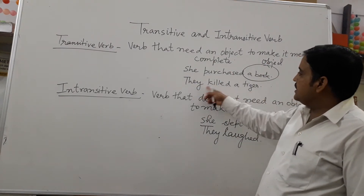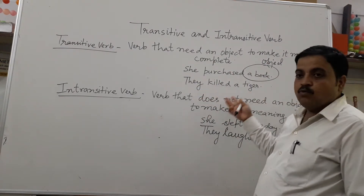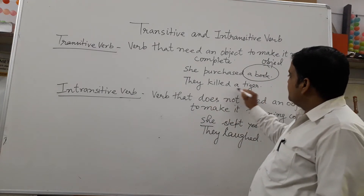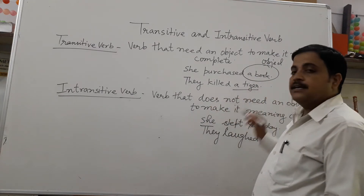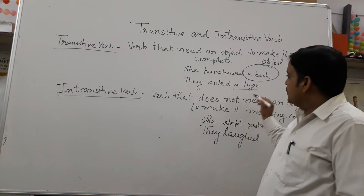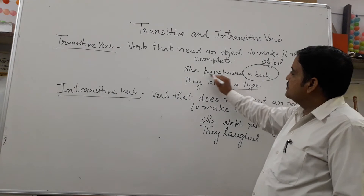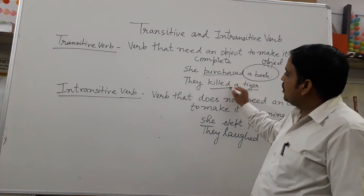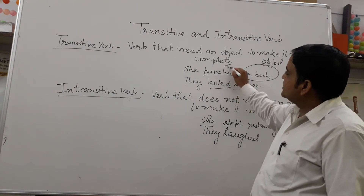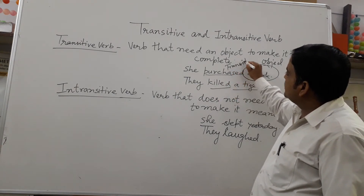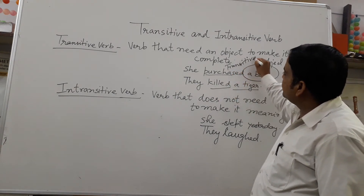For example: 'They killed a tiger.' What was killed? The answer will be 'tiger.' Such verbs are called Transitive Words.